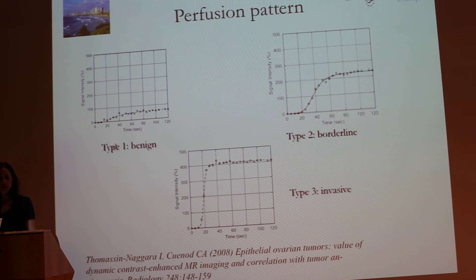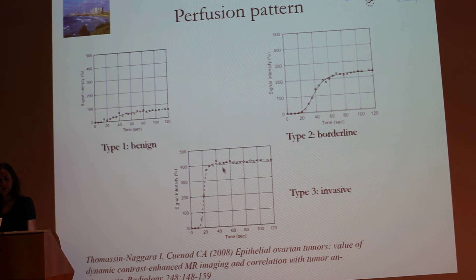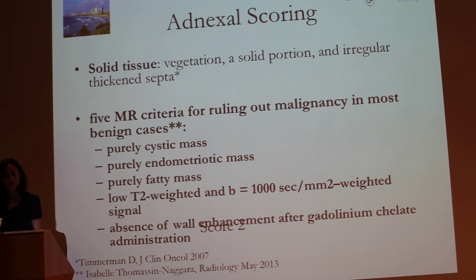The important point is to know the three kinds of perfusion patterns in ovarian tumors. Type 1 has a curve with a quite regular slope. Type 2 means the mass is supposed to be borderline — just between malignancy and benignity — with a slope quite different from the first. When you have an invasive mass, the perfusion is very high with a very high intensity after injection. Remember these three curve types, as they help classify the adnexal mass.